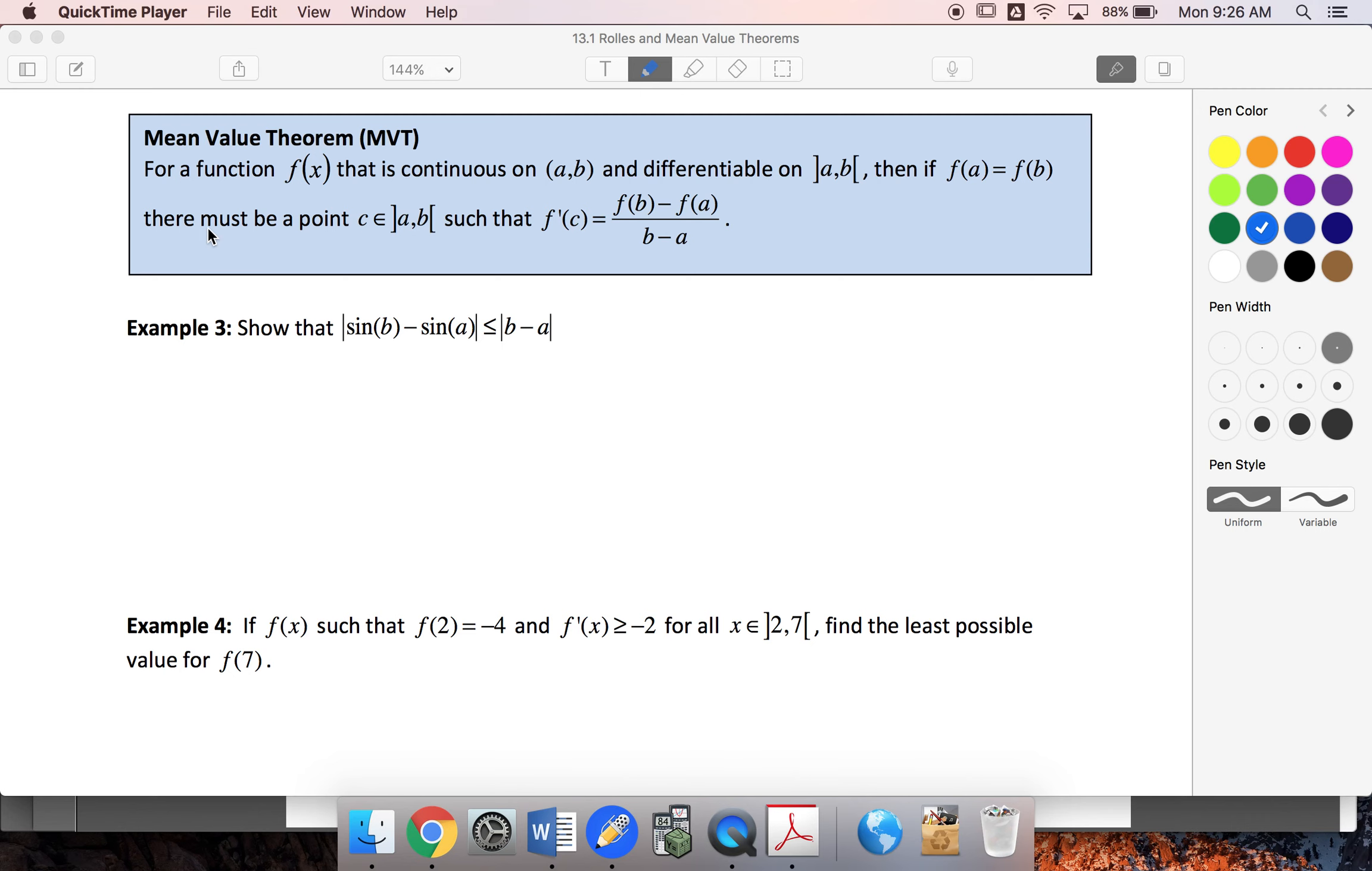We've got Mean Value Theorem, which is the less specific version of Rolle's. We've got a function continuous on (a,b) and differentiable on (a,b). Then... copy and paste error here, sorry, this is Rolle's theorem. Getting rid of this.